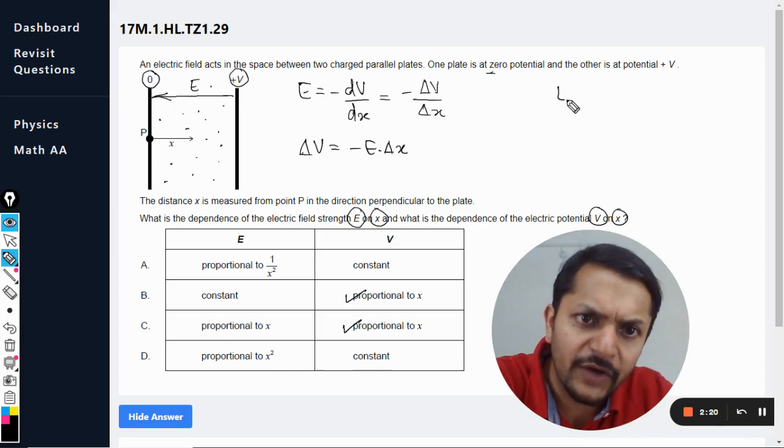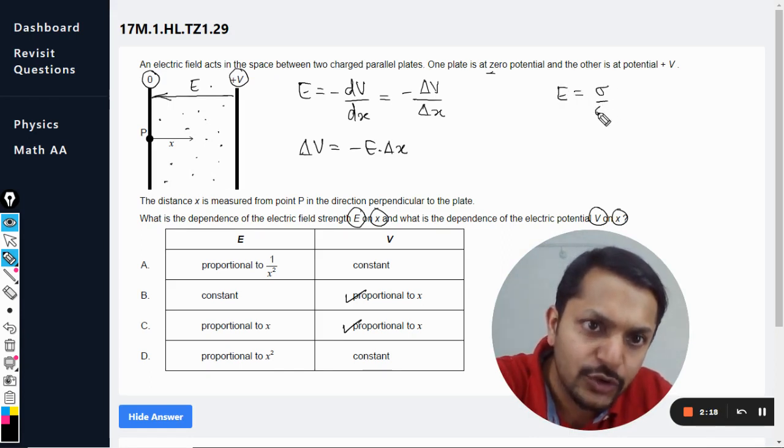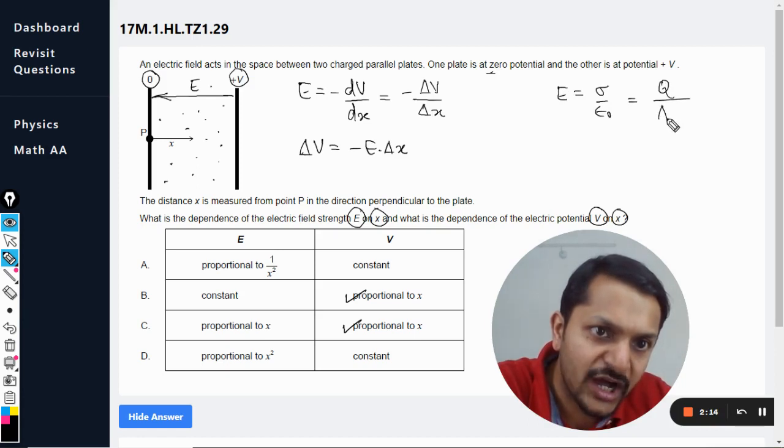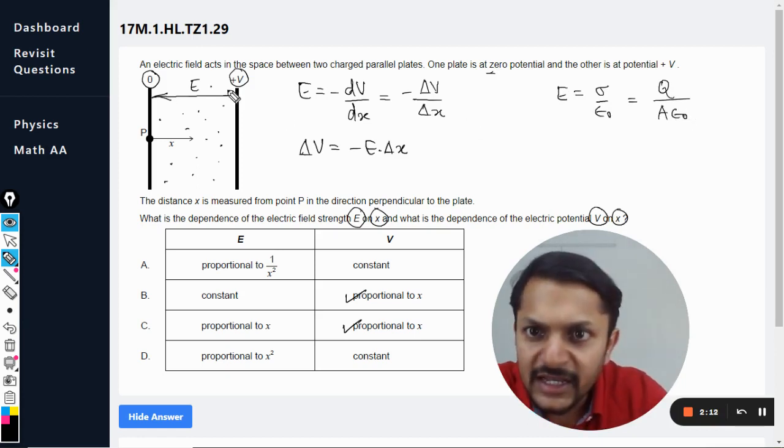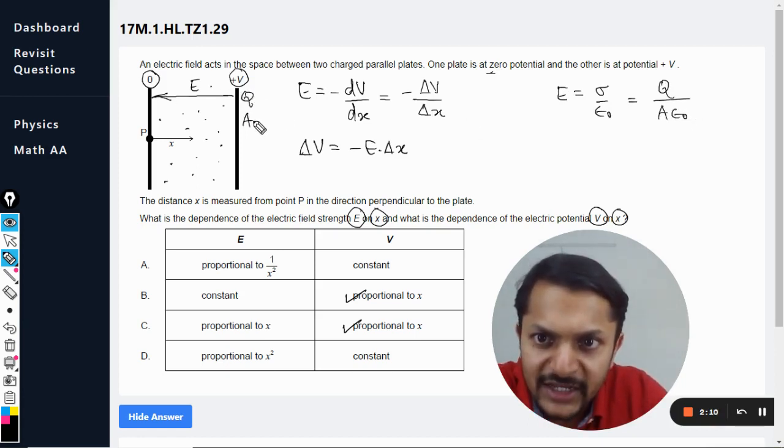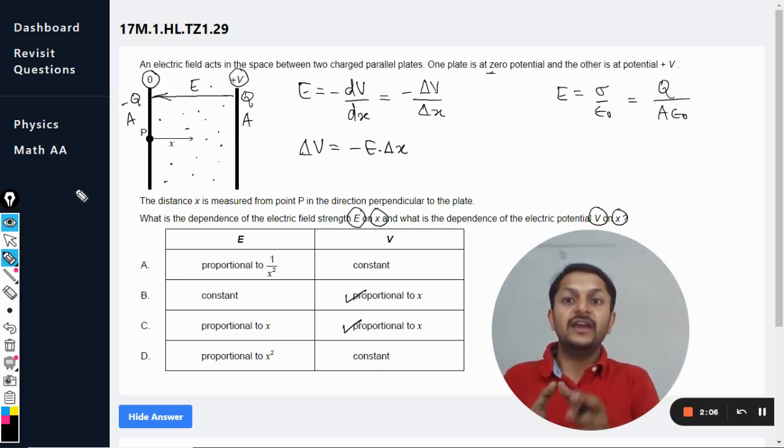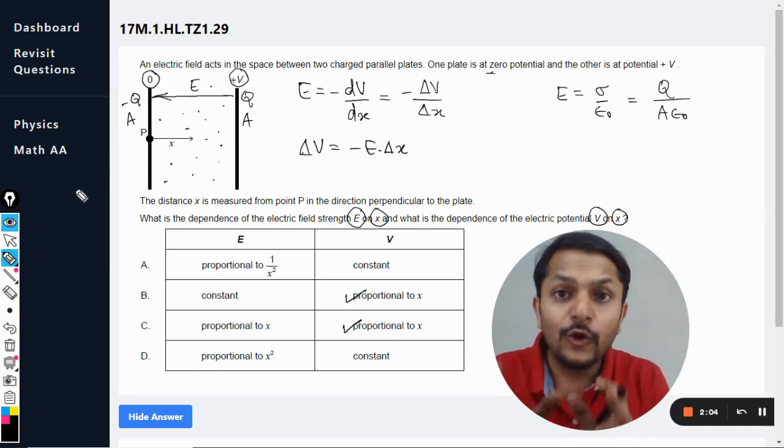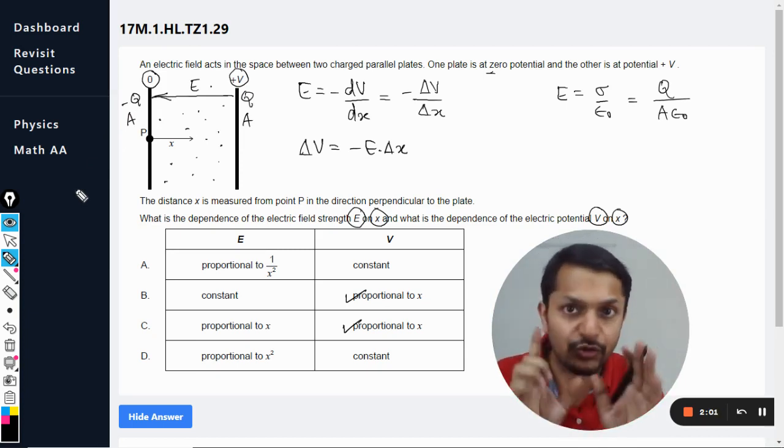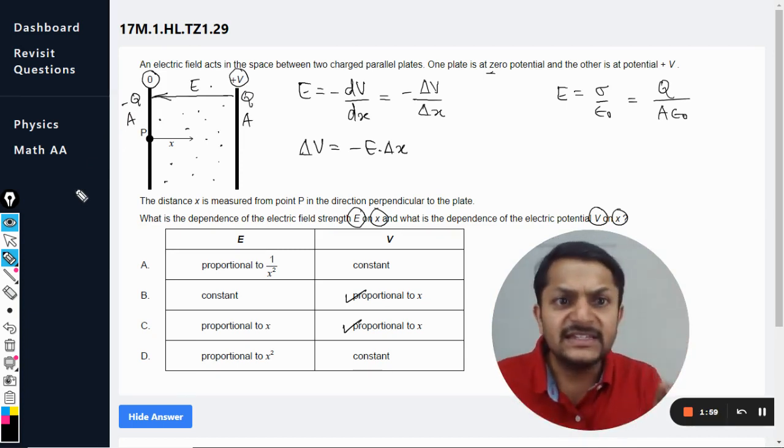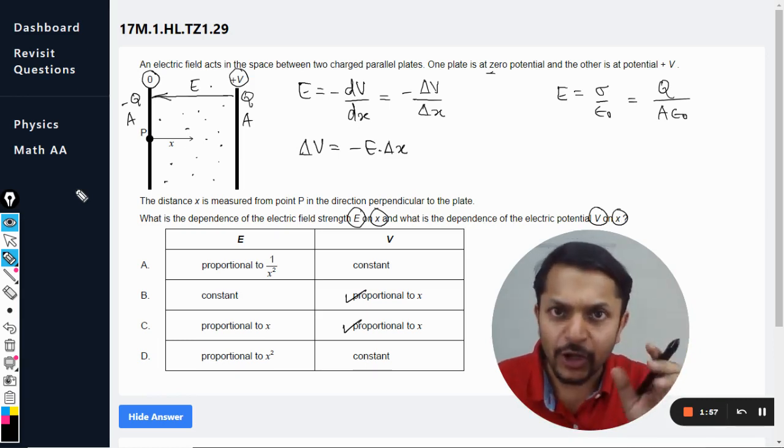And there is a formula for this also: E is equal to sigma divided by epsilon naught, where sigma is the charge density on the plate. Like let's say this charge is q and the area of the plate is A. This charge is minus q, the area of the plate is A. It is literally looking like a capacitor, and there's no difference between this and the capacitor. Okay, so this E is given by q divided by A epsilon naught. One thing is clear.